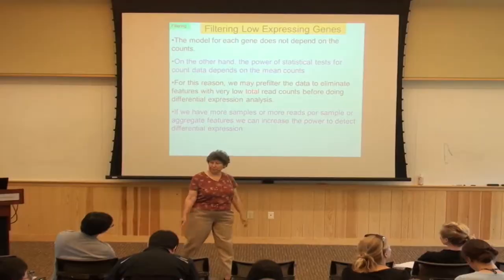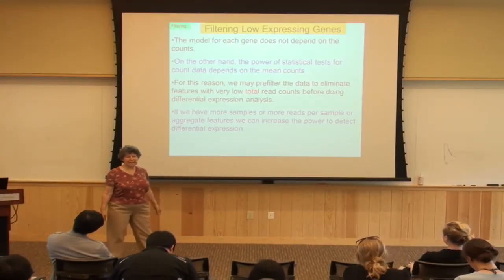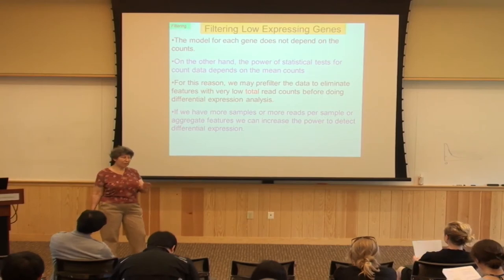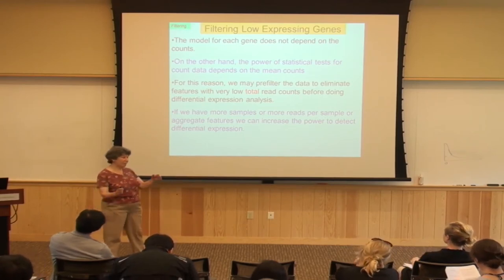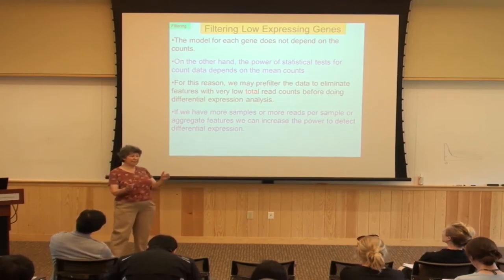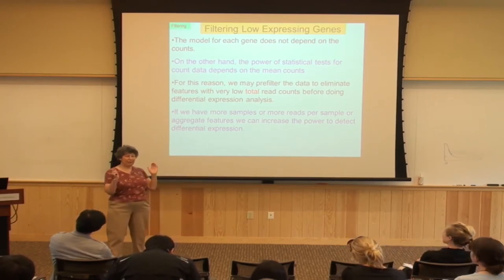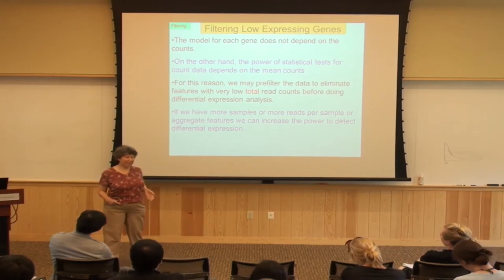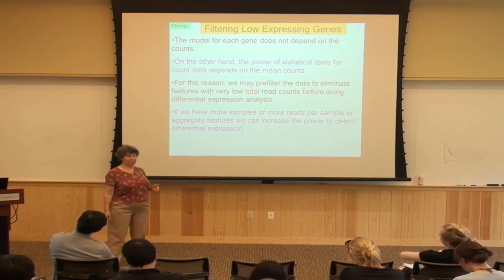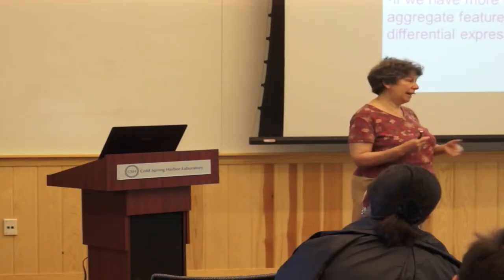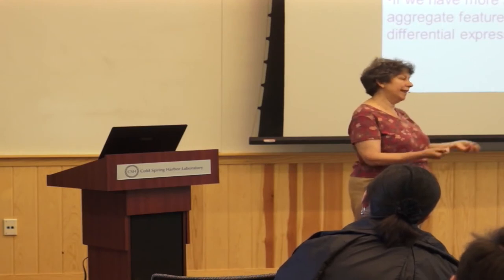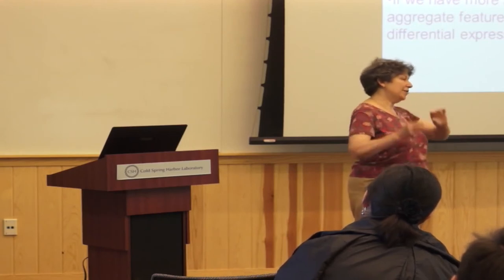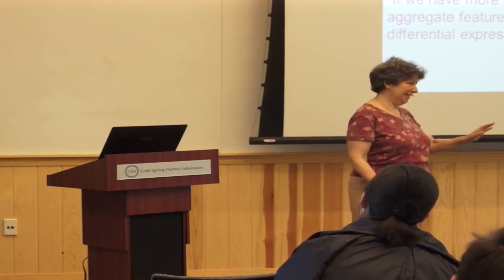In all of these analyses, the way we treat it is we do one gene at a time test, and then we use false discovery rate to adjust. But if you're really interested in pathways or gene families and you're going to accumulate reads, then you just redefine your feature to be that thing.